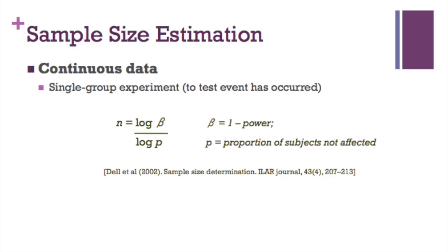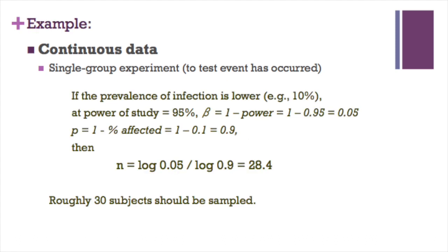For continuous data with single group experiment design, we only need to know the proportion of subjects not affected, the p. For example, if the prevalence of infection is lower, let's say 10 percent, at power of study equals 95%, beta is 1 minus power equals 0.05, p is 1 minus percentage affected equals 0.9. Roughly 30 subjects should be sampled in this study.